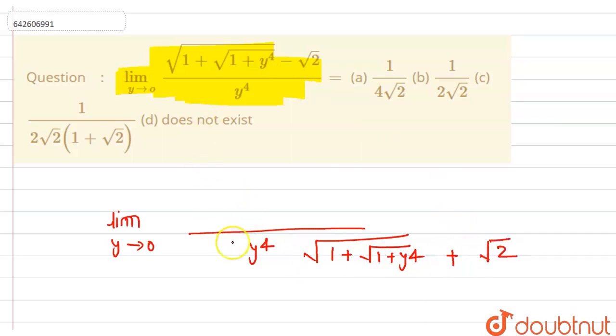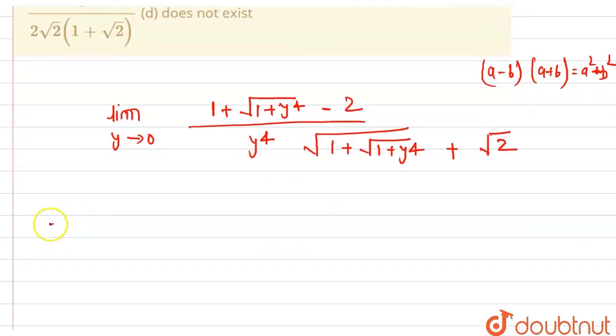The numerator will become square of this term minus square of this term. We know that (a - b)(a + b) is given by a² - b². This minus b² is 2. So our limits become, this is our limit.